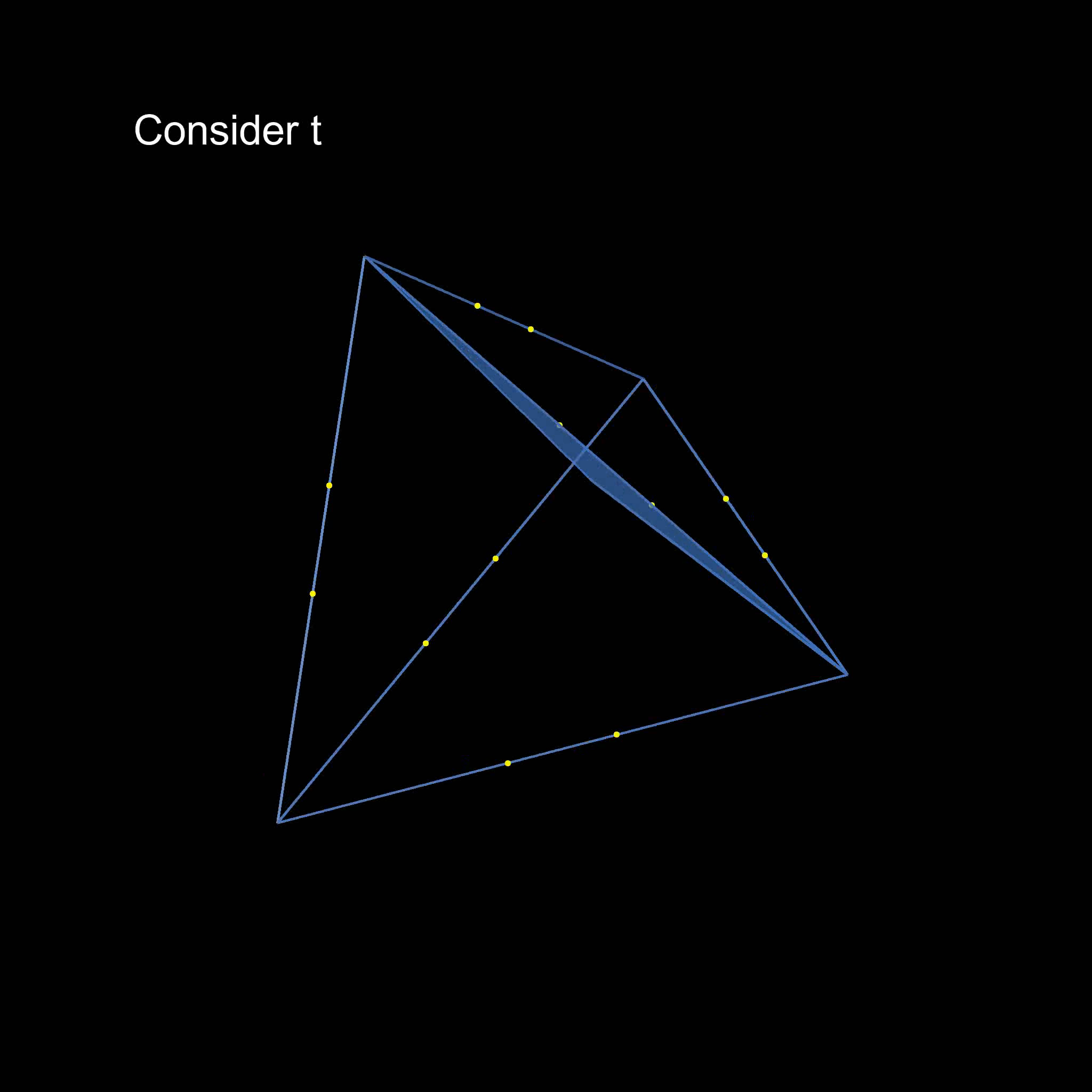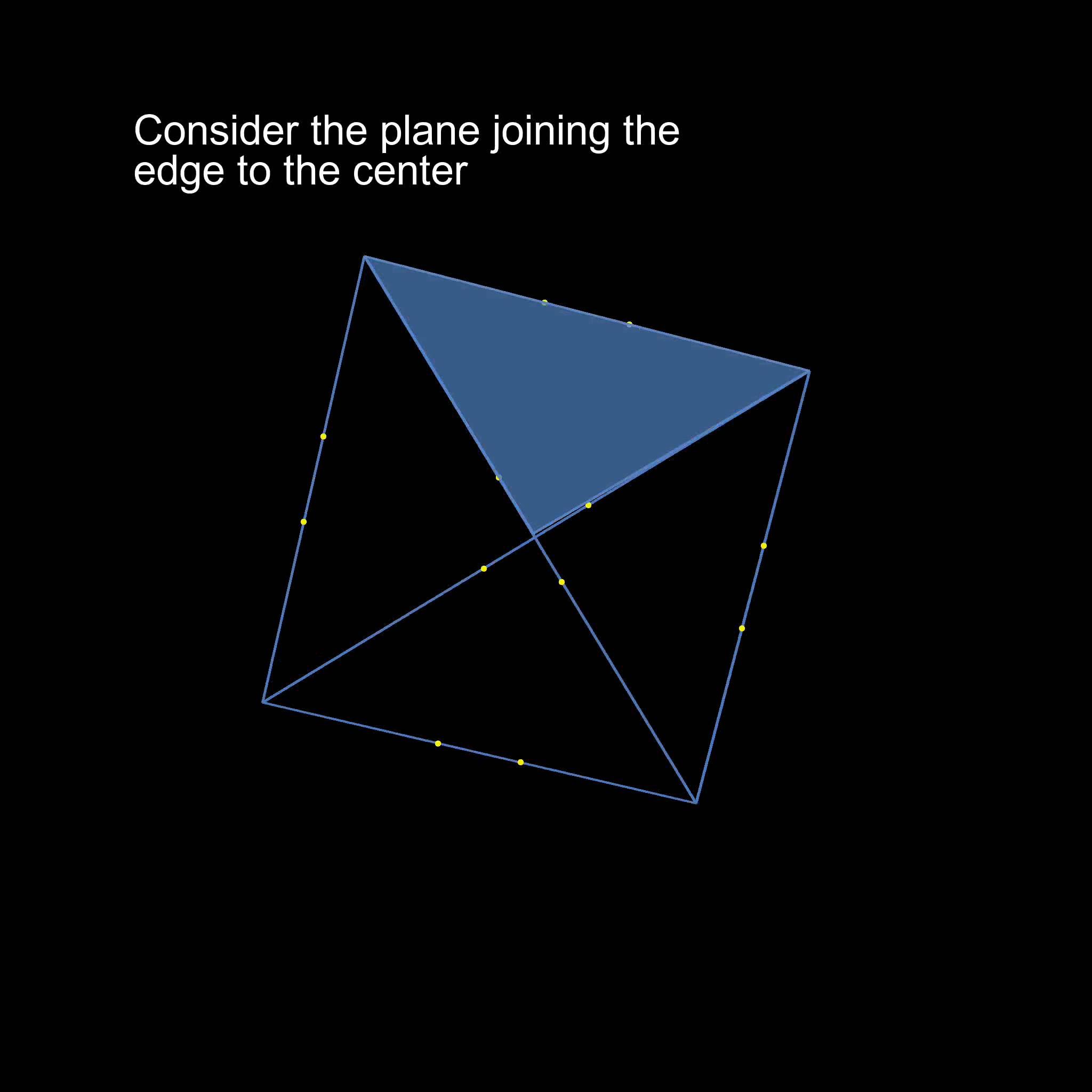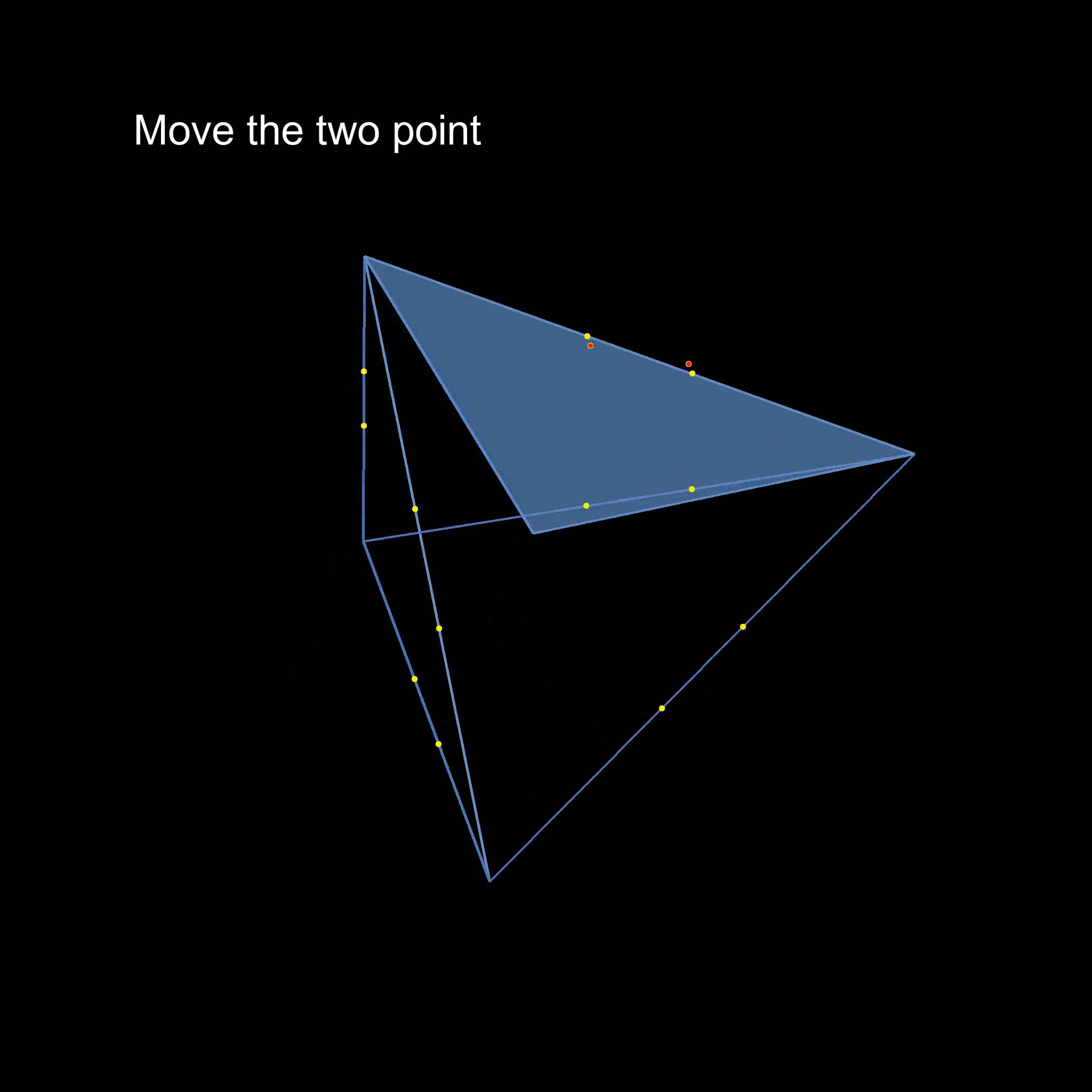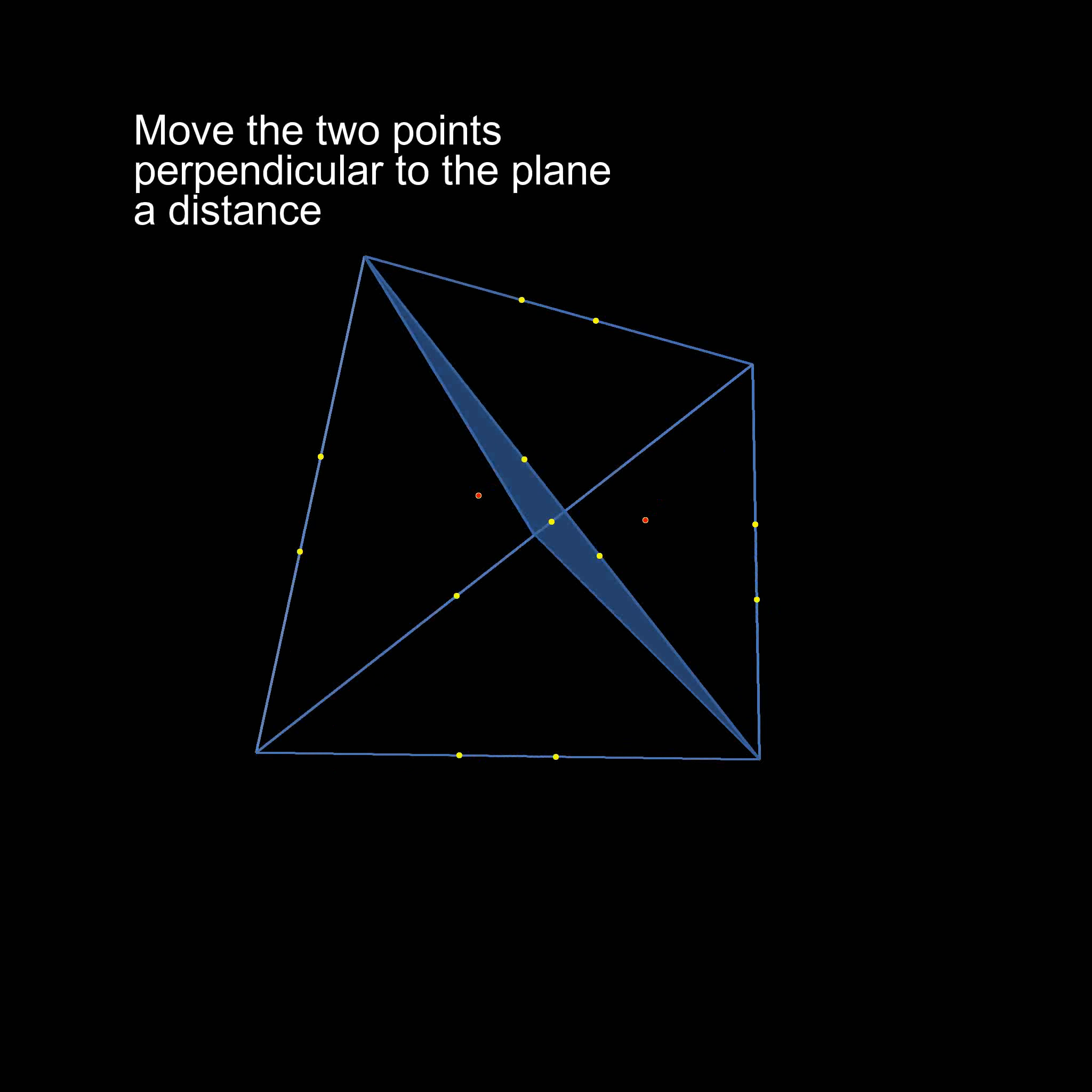Then take every edge and join it to the center of the tetrahedron to form this triangular plane. And then move the two yellow points a distance t perpendicular to the plane on either side of the edge.